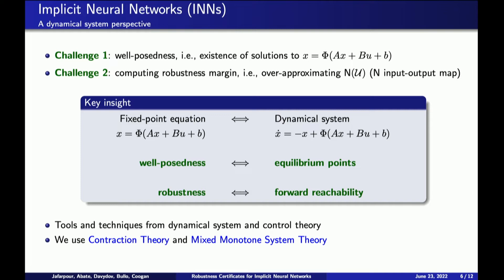This correspondence between INNs and dynamical systems has an elegant consequence: we can use the tools and techniques from dynamical systems to study INNs. In particular, I want to introduce two tools from dynamical systems: contraction theory and mixed-monotone system theory. For the next two slides I'll describe what these frameworks are, and then explain how we use them to study the robustness of our INN.